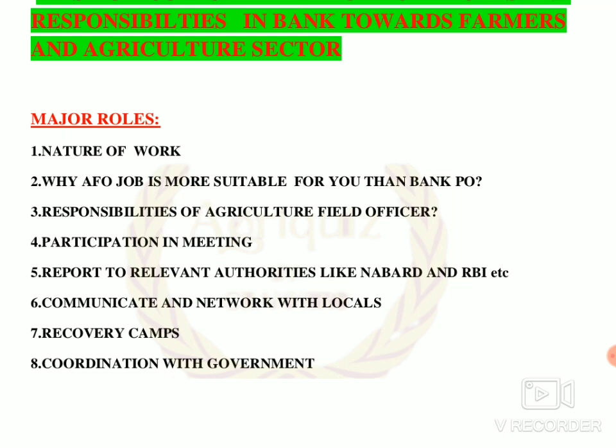The last point is coordination with the government. Agriculture Field Officers coordinate with local government bodies such as gram panchayats. They follow ongoing activities in rural areas to stay aware of various things that villages might require, such as modern roads and farm vehicles like tractors, so that they can help meet the basic requirements of local people.